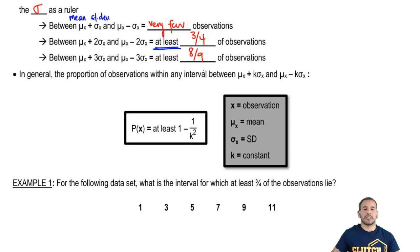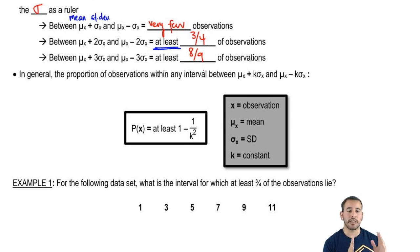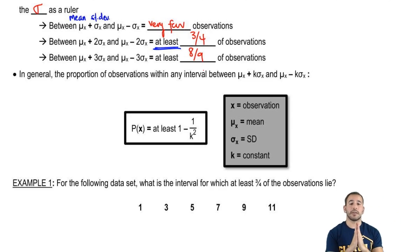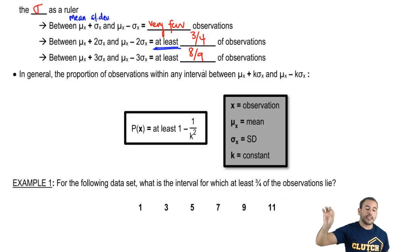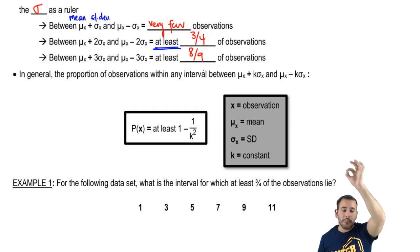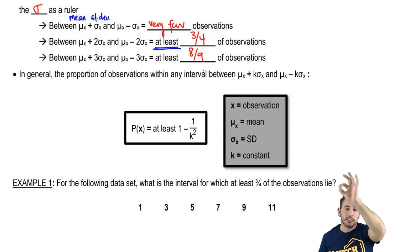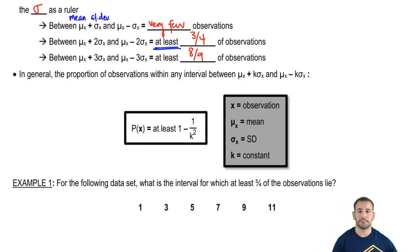So where do they come up with three-fourths and eight-ninths? In general, the proportion of observations within any interval between the mean and k standard deviations — where k is 2, 3, 7, 19, whatever — is at least 1 minus 1 over k squared. Here, x is any individual observation, the mean is the mean of that random variable x, sigma is the standard deviation, and k is just a constant representing how many standard deviations above and below the mean we're interested in.